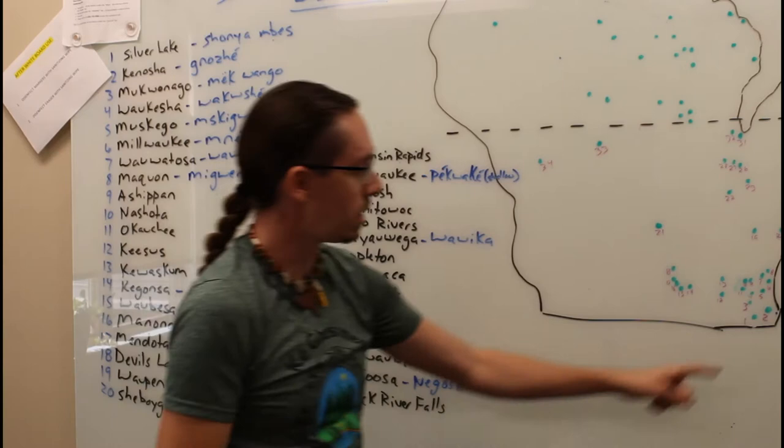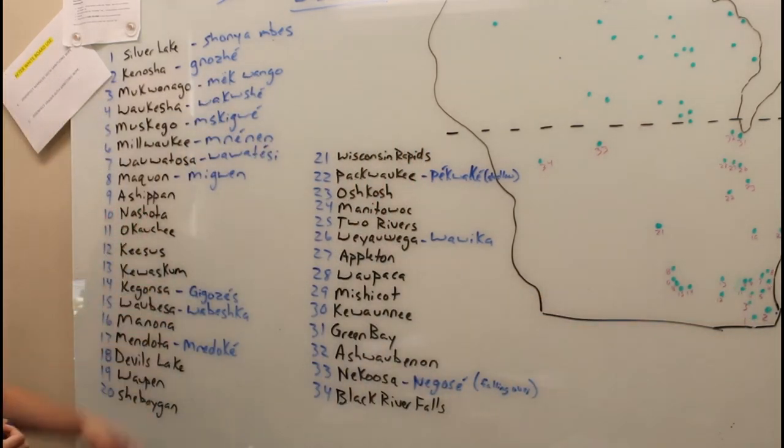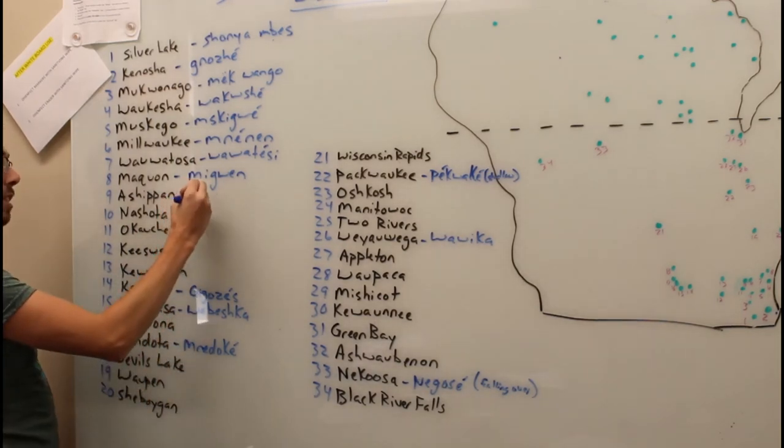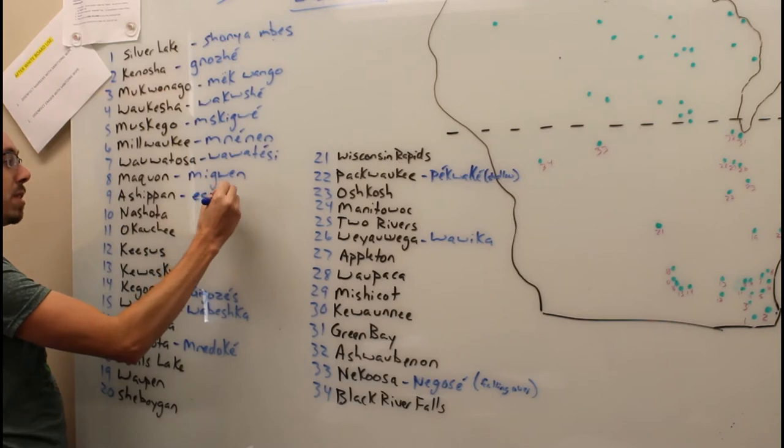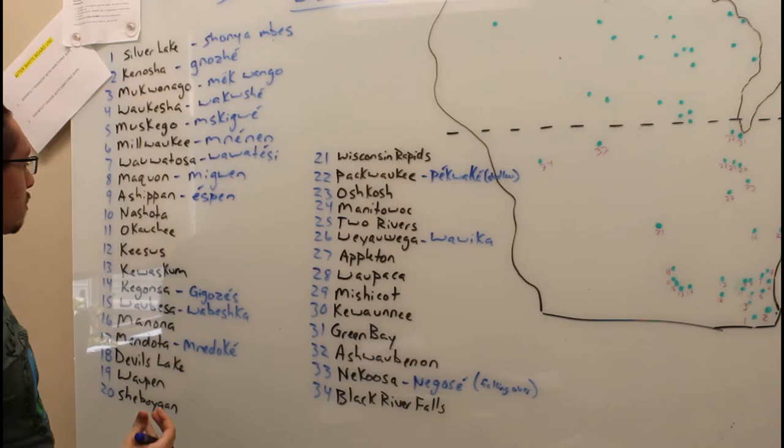Number nine, you move a little southwest of there, and you're gonna run into Oconomowoc, Wisconsin, which is actually Aspen. Aspen in Potawatomi is a raccoon.